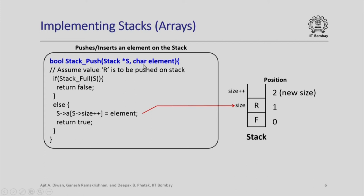For pushing, the char element will carry the element that is to be pushed. Imagine that we need to push 'r' on the stack which already contains 'f'. The implementation is very simple: if the stack is full we simply return false without pushing anything, because nothing can be pushed. Otherwise we push the element onto the stack at s[size] and then say size++, so that size is incremented for subsequent usage. Notice that size was 1 originally — that is where the value 'r' will be inserted — and size will be changed by size++ making the new size 2.